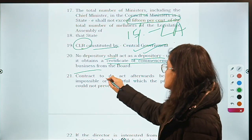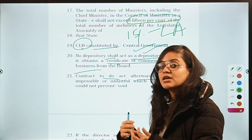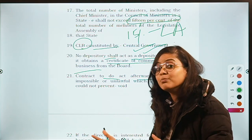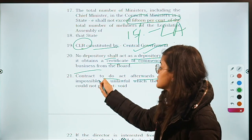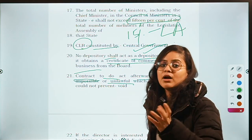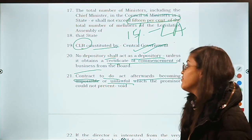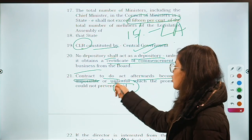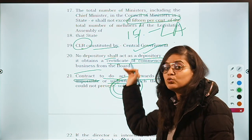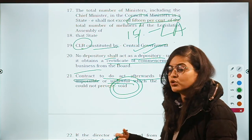What happens when a contract to do an act — to be performed later, not on the date of contract — becomes unlawful? If the act becoming unlawful was out of the control of the party and the party could not have helped it, then such a contract is void. But if the party knew that it was unlawful, then it will be voidable at the option of the promisee.